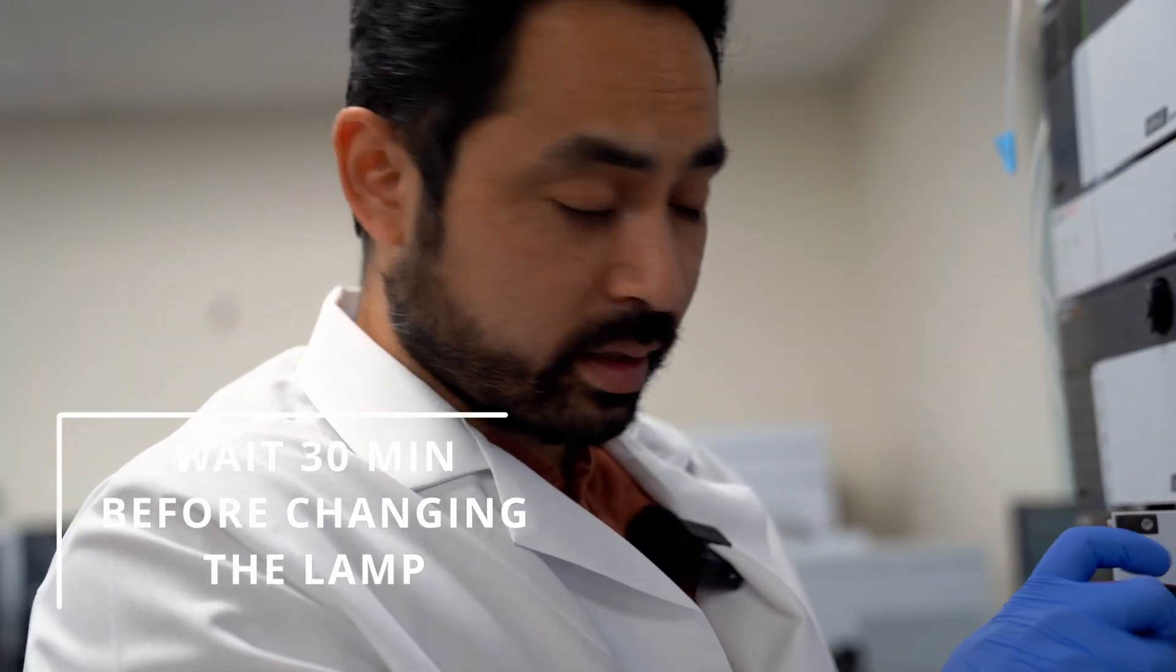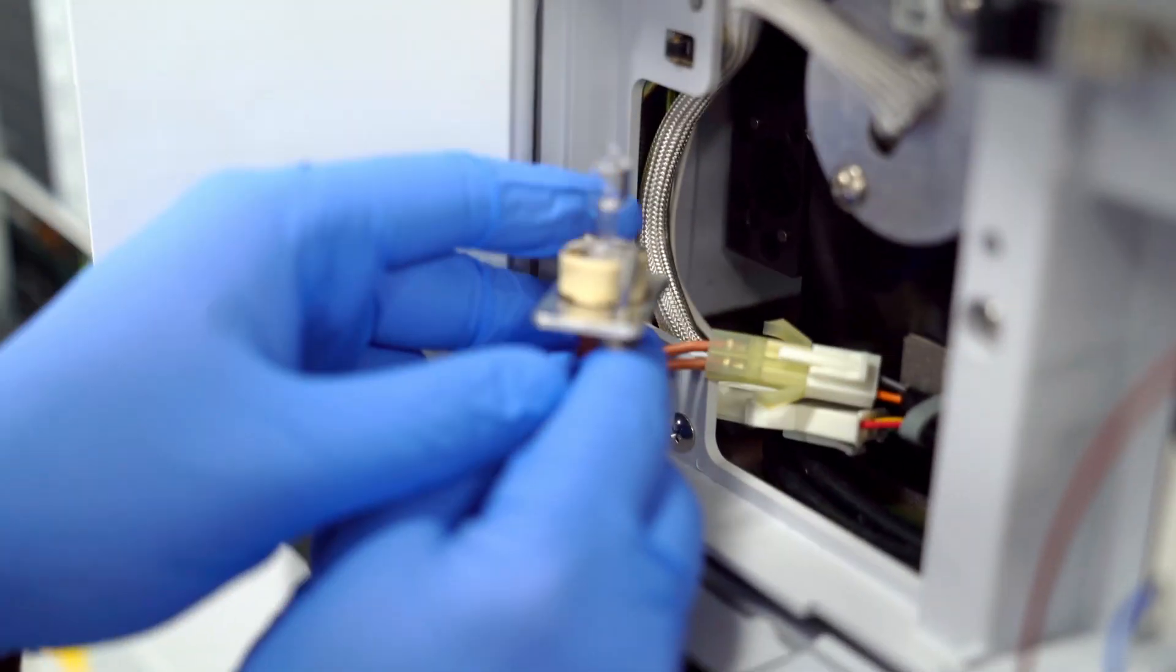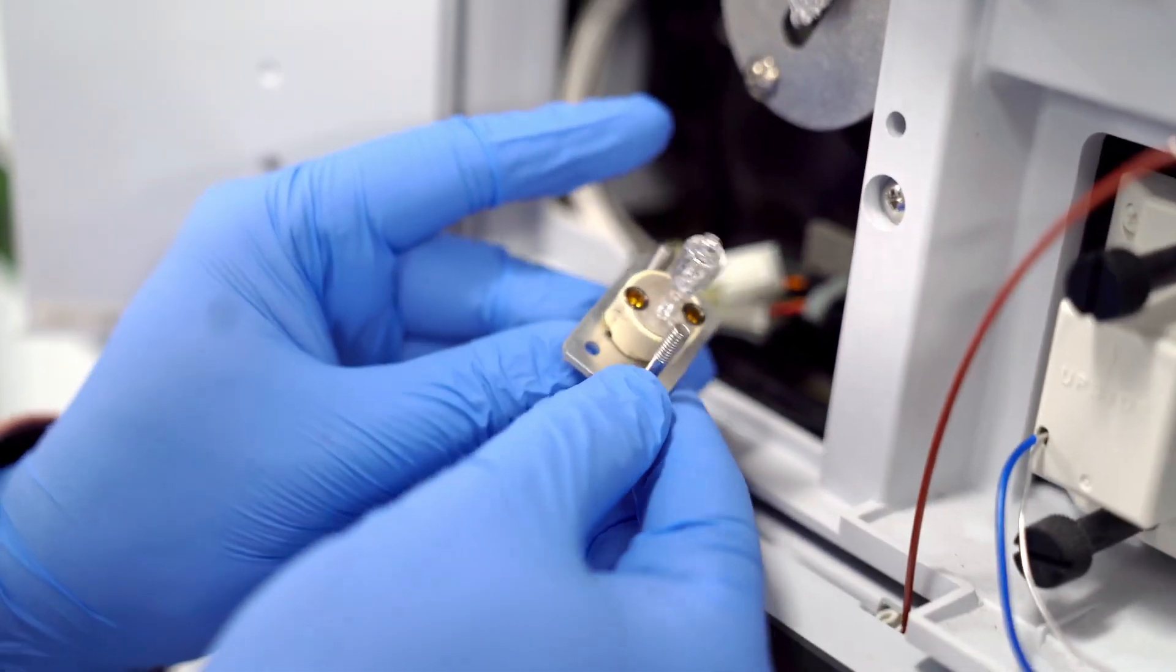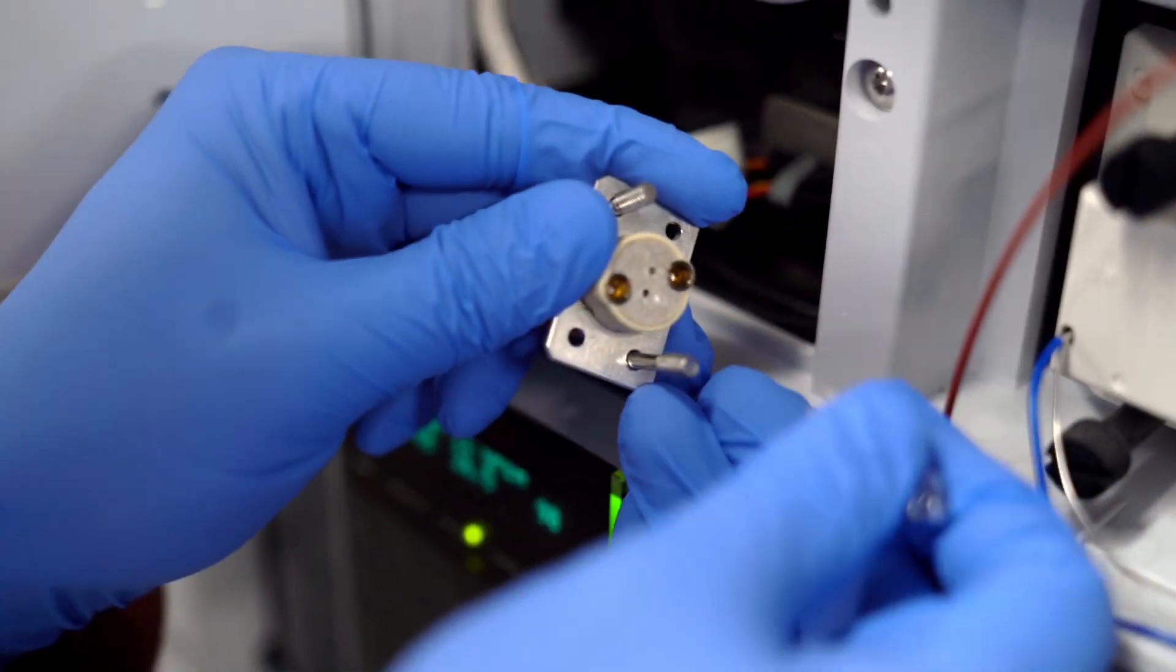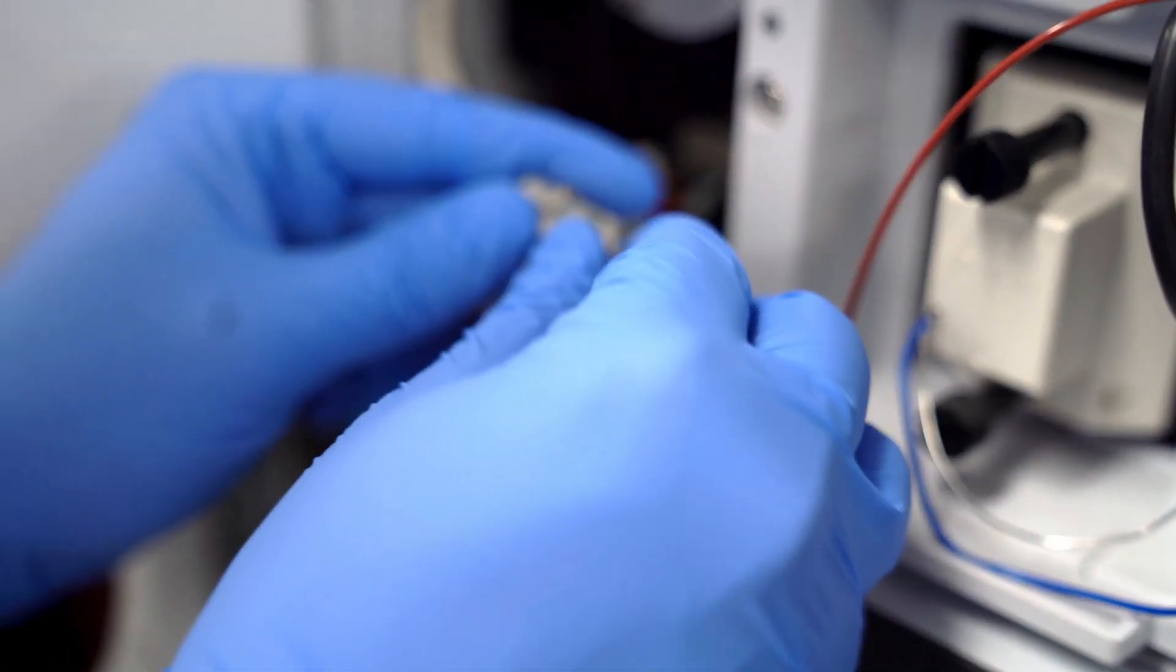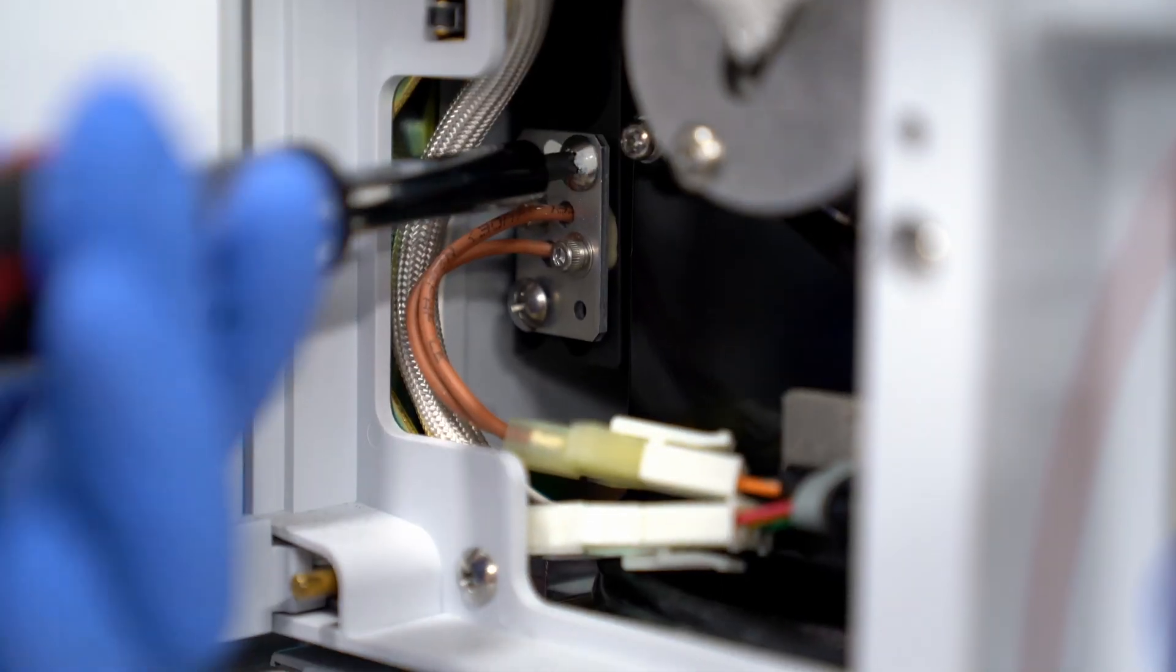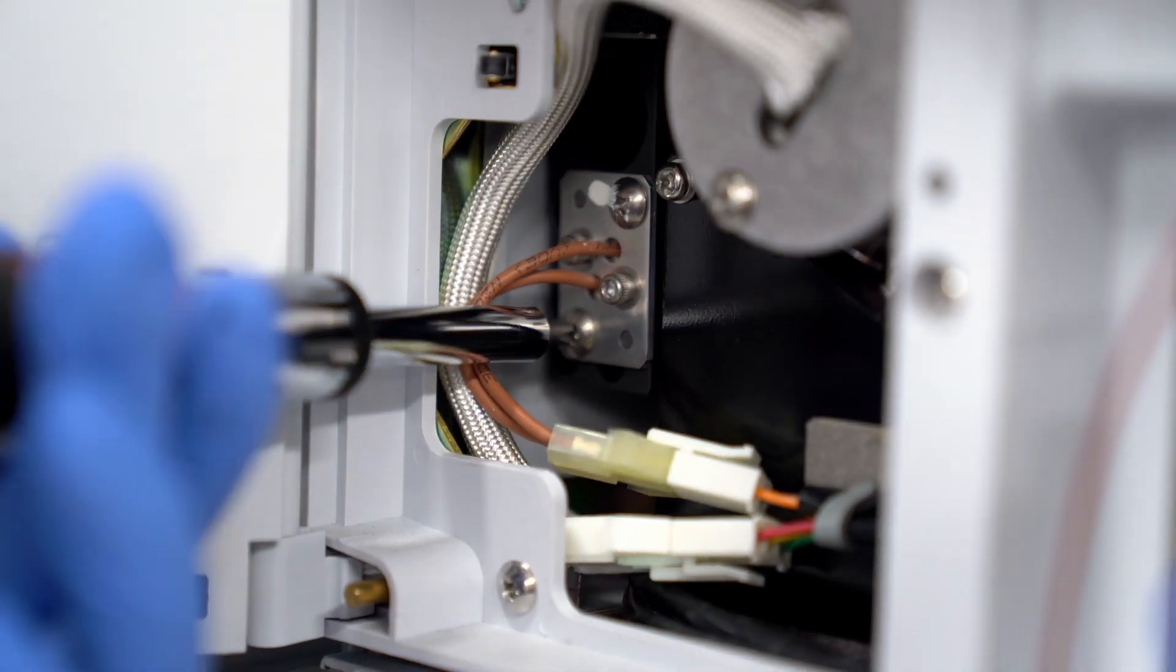After you turn off the PDA, wait 30 minutes. So here is the tungsten lamp, and the way you change it is just like you change a car lamp - you can just pop this guy off just like that. Super easy. That's how you change that lamp out.